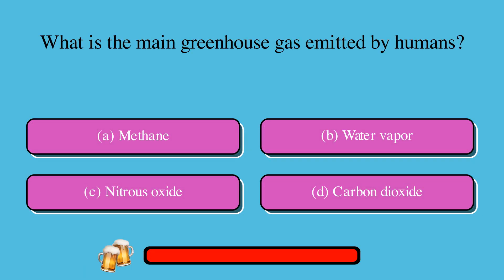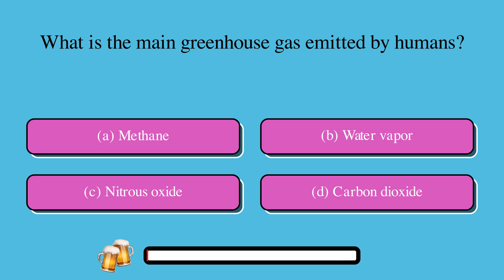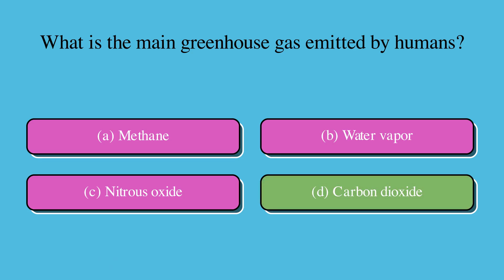What is the main greenhouse gas emitted by humans? A. Methane, B. Water vapor, C. Nitrous oxide, or D. Carbon dioxide? The correct answer is D. Carbon dioxide.